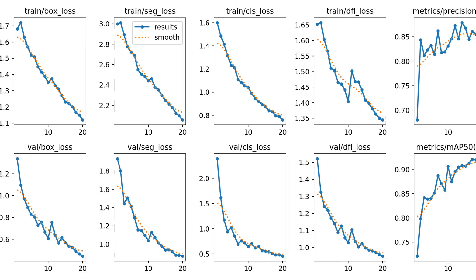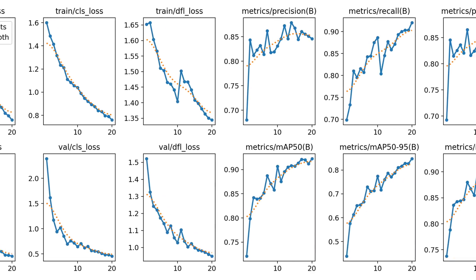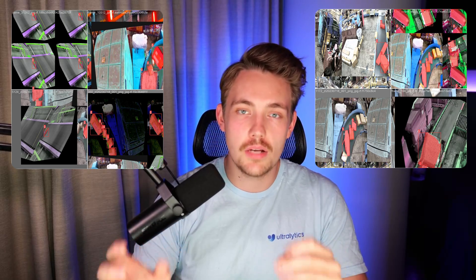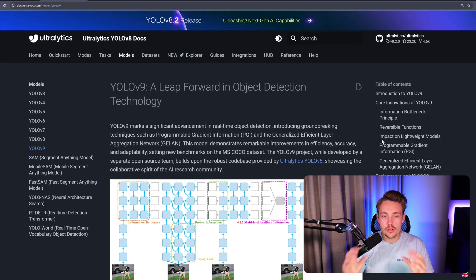Hey guys, welcome to a new video. In this video we're going to see how we can train a custom YOLOv9 model on an industrial dataset. We're going to have a dataset with industrial packages running on a conveyor belt, train a custom YOLOv9 model, and I'm going to show you the whole pipeline using Ultralytics. We can then count the number of objects going in and out on a conveyor belt. So let's jump straight into the Ultralytics documentation.